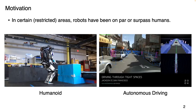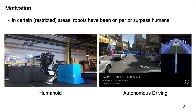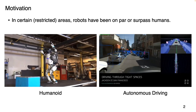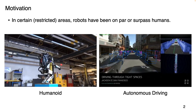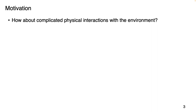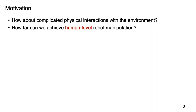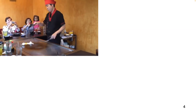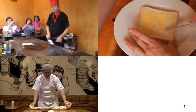In recent years, we have witnessed a tremendous amount of progress in the field of robotics. In certain restricted areas, robots start to become on par or sometimes surpass human performance. For example, the humanoid robots built by Boston Dynamics have clearly surpassed my personal capability of performing backflips. Or in the self-driving domain, although we haven't seen a massive deployment of self-driving cars in daily life, the field has moved a long way. But we humans can perform much more complicated manipulation tasks — cracking eggs, spreading butter on bread, making dough and making sushi.